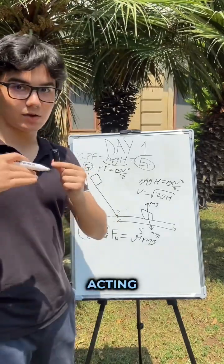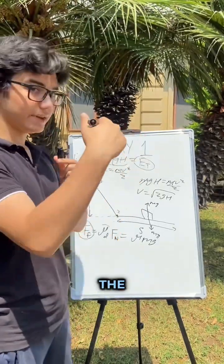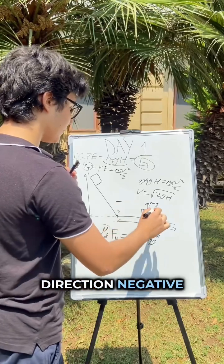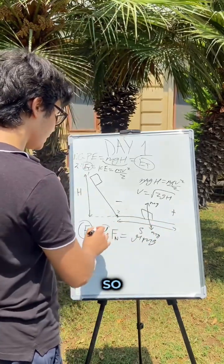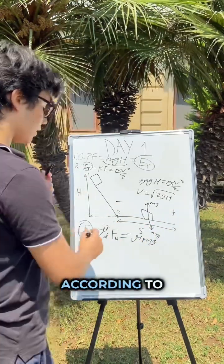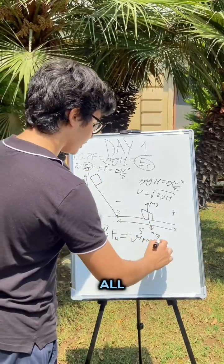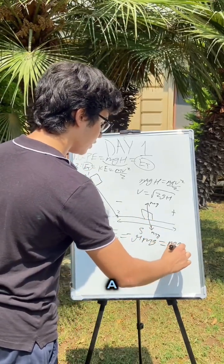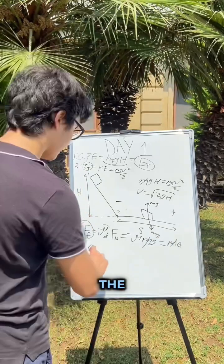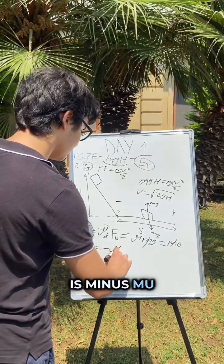Our friction force is acting in the opposite direction, it's acting in the negative direction. So we'll take this direction negative and this direction positive. Here we're just gonna put a minus sign. According to Newton's second law, we can say that this all equals ma, where a is the acceleration. The acceleration is minus mu g.